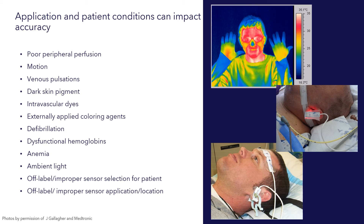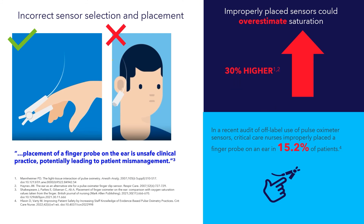Incorrect sensor selection and placement has significant patient safety implications. Often the use of a finger sensor on the ear or forehead can result in erroneously high or overestimation of oxygen saturation, especially in the face of desaturation. So it's important to use the right sensor for the right patient in the right location.